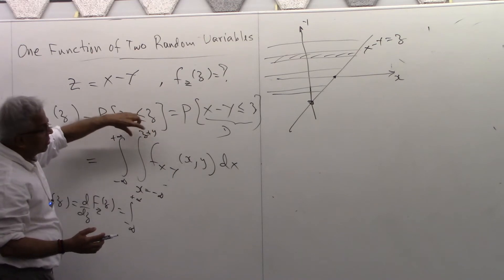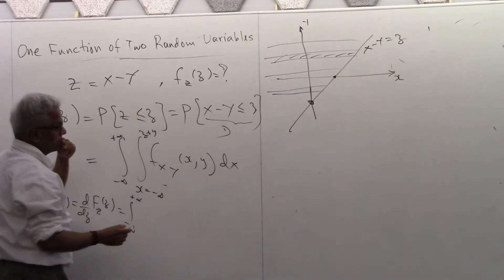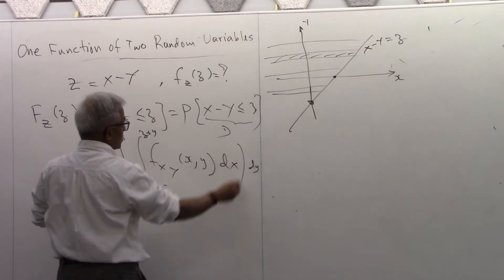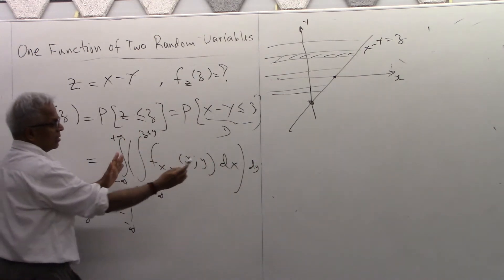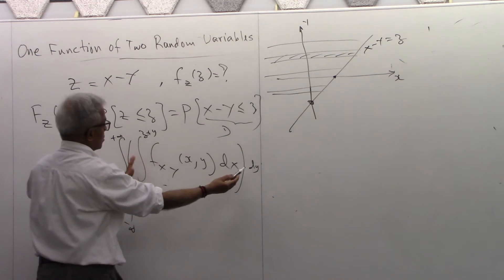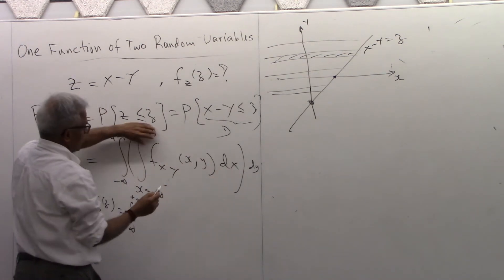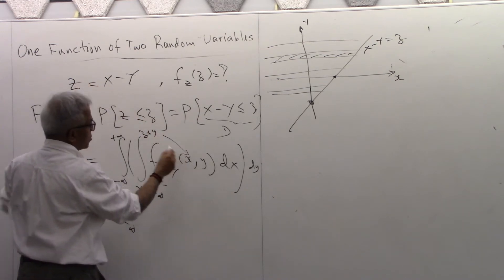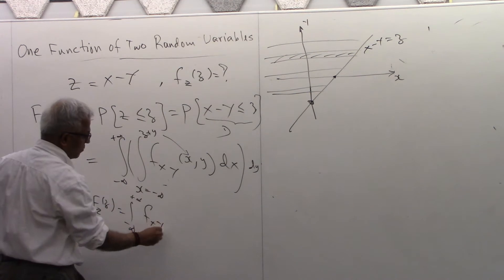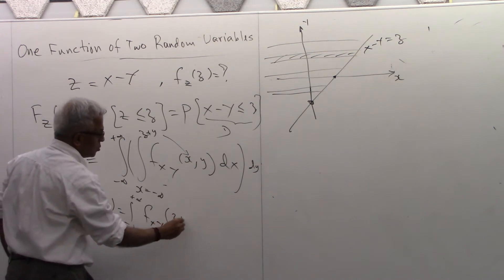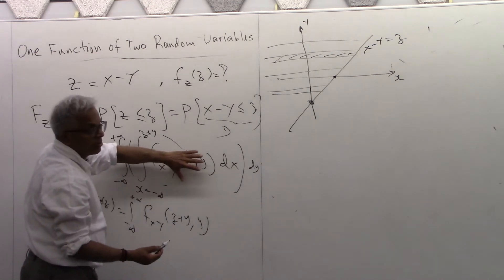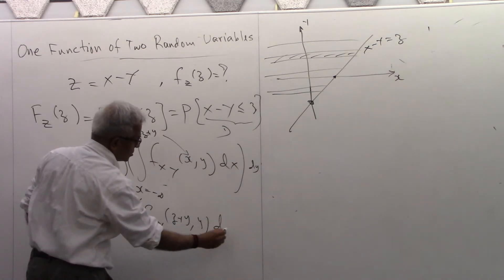Taking the derivative, we get 1, and the variable of integration is X. So wherever X appears, it goes and sits at Z plus Y. So this becomes f_{X,Y}(Z+Y, Y). The derivative of the lower limit with respect to Z is 0, so there's no contribution from that term. That's essentially the result.